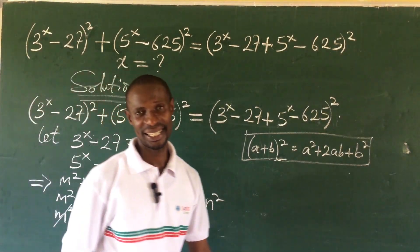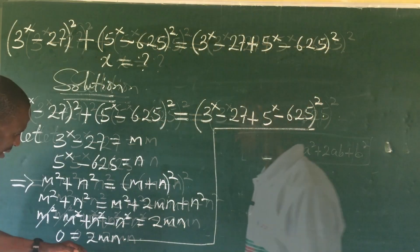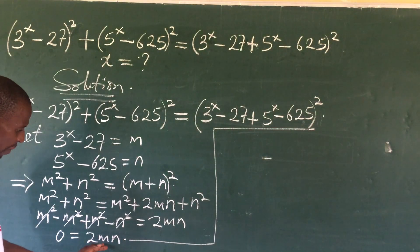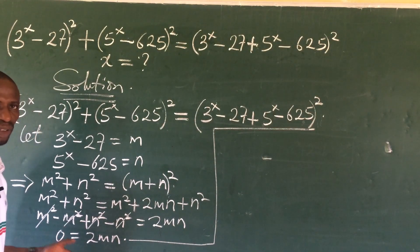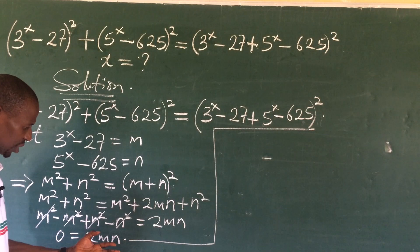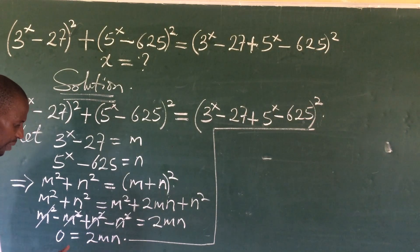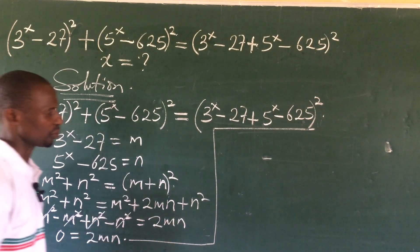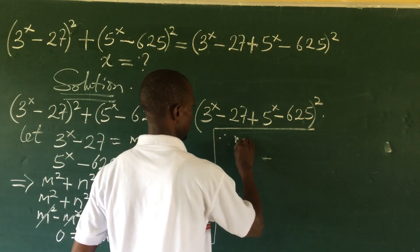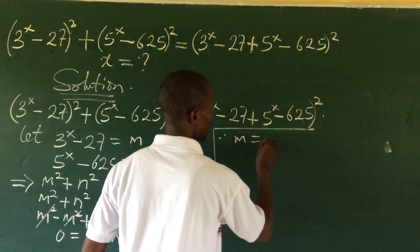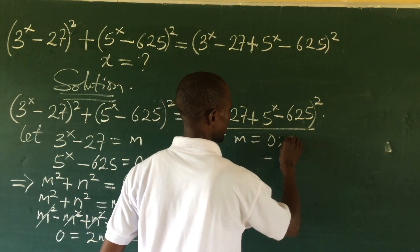From this expression, if we make m the subject we get m = 0, and if we make n the subject we get n = 0. So therefore m = 0 and n = 0.